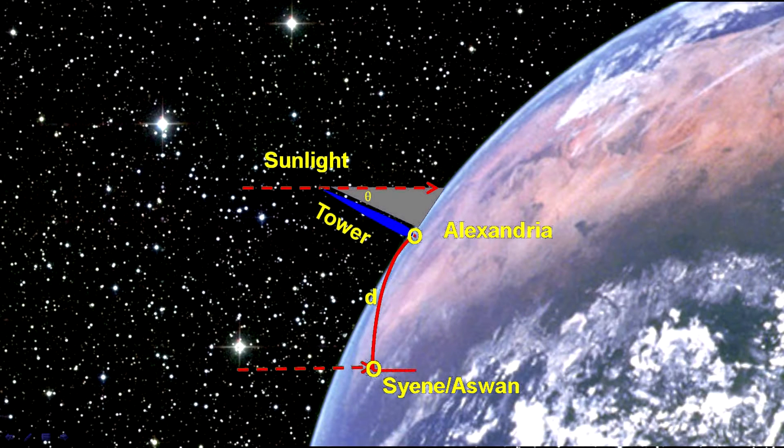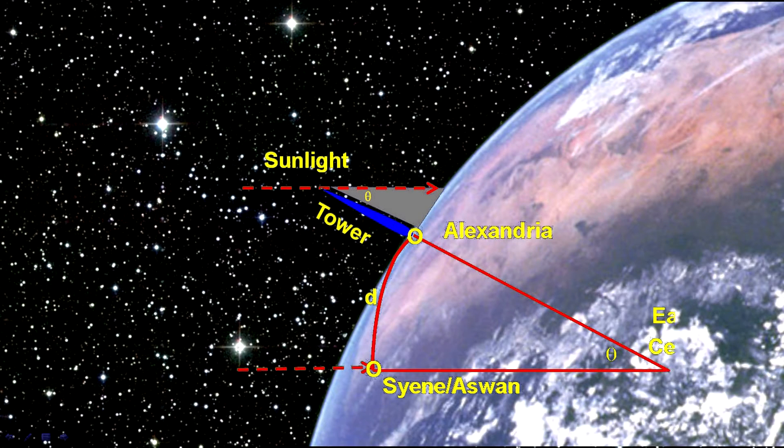Geometry tells us the angle measured at the tower is the same as the angle between lines connecting the two cities to the center of the Earth. This is because when a straight line crosses parallel lines, it crosses them at the same angles.